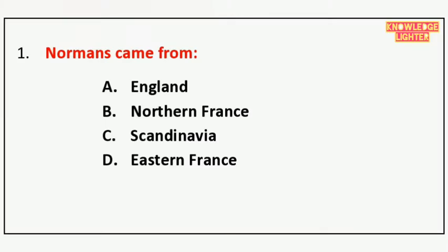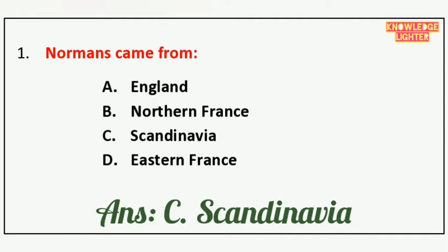Your first question is: Normans came from — option A England, option B Northern France, option C Scandinavia, option D Eastern France. And the correct answer is option C Scandinavia.